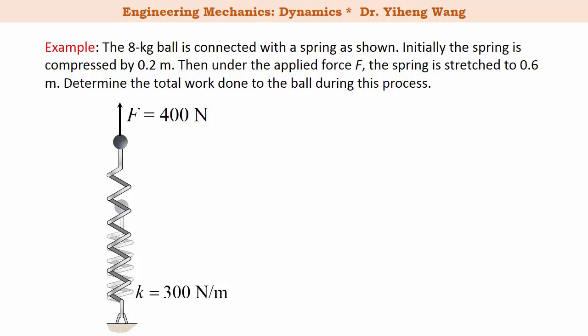Let's look at this example. A ball with a mass of 8 kilograms is connected to a spring with a spring constant of 300 newton per meter. Initially the spring is compressed by 0.2 meter, and then after a 400 newton force is applied the spring is stretched to 0.6 meter. We need to determine the total work done to this ball during this process, which includes the work done by all the external forces. A free body diagram indicates we have the applied force of 400 newtons, the weight force, and the spring force.